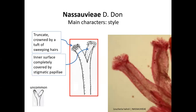Another of the main characters of the tribe is the style. With very few exceptions, the members of Nassauvieae have style branches truncated at the apex and crowned by a tuft of sweeping or pollen collector hairs. You can see this also in this photograph of one species of Leuceria. The inner surface is completely covered by stigmatic papillae. This is the fertile part of the style, and this occurs not only in the Nassauvieae but also in all the basal grades of the family.